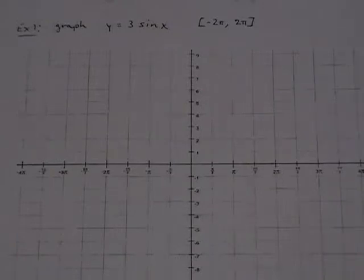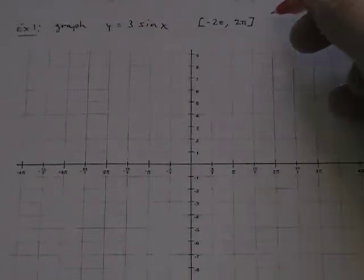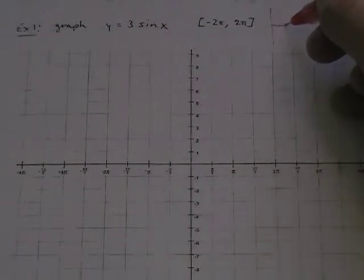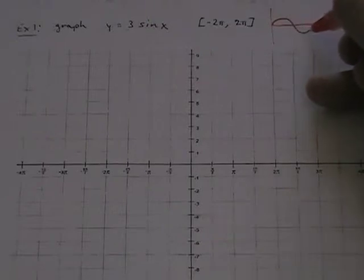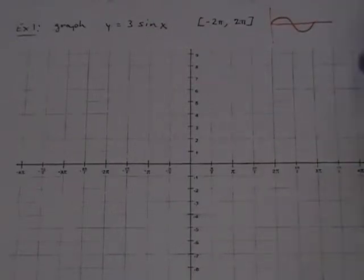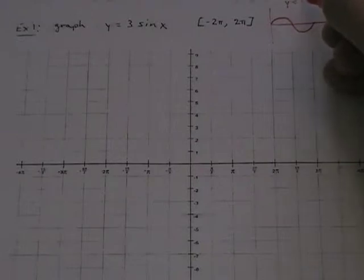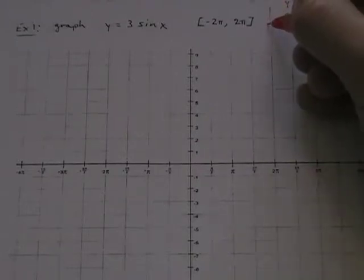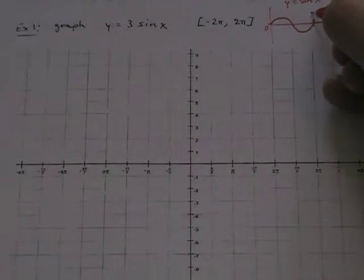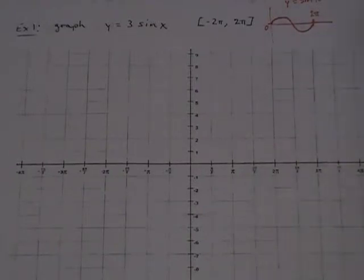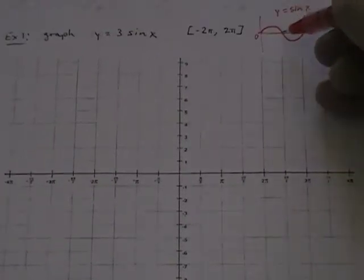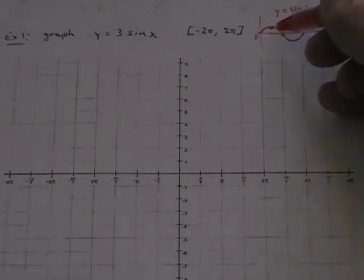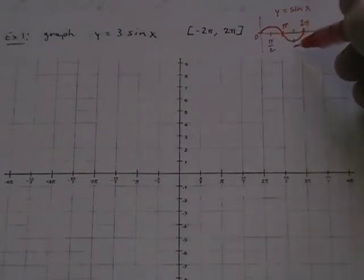Anytime you go to graph functions, you need to know what's called the base graph — basically what does this look like if there are no transformations. In this case, the base graph is y equals sine of x. It's going to start at zero and go to 2 pi — that's its period. The middle point is at exactly pi, the peak is at pi over 2, and the valley is at 3 pi over 2.